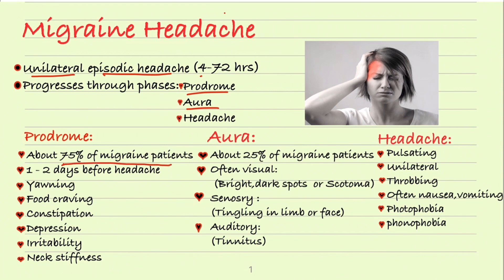About 75% of migraine patients present with prodrome, and the headache usually starts one or two days after the prodrome. The prodrome can include yawning, food craving, constipation, depression, irritability, or neck stiffness. About 25% of migraine patients present with aura — more often visual auras, where dark spots or scotoma can be present.